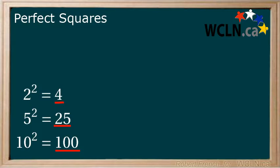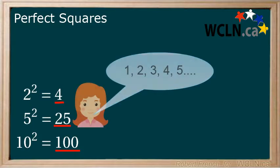Positive integers start at 1 and go up from there. A good way to think about them is as counting numbers: 1, 2, 3, 4, 5, and so on.